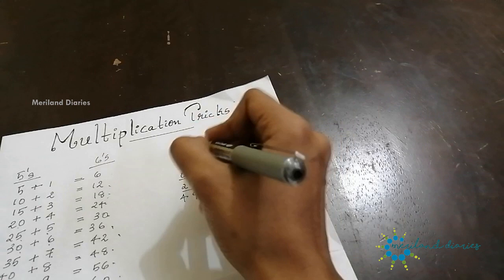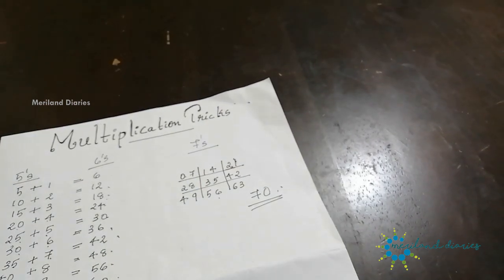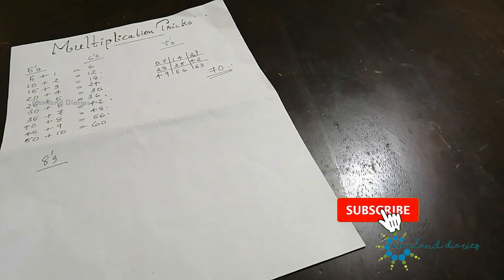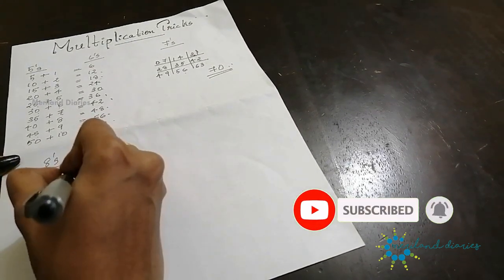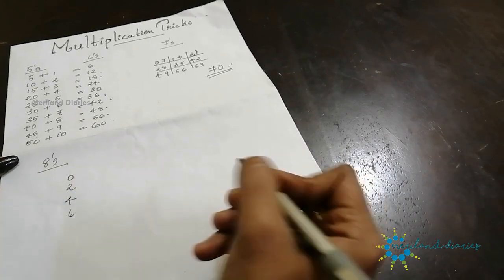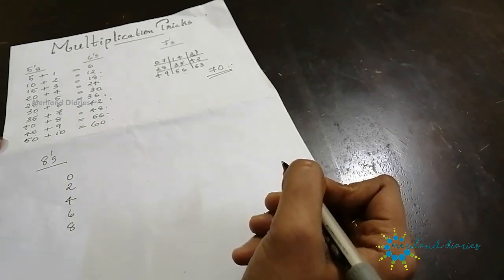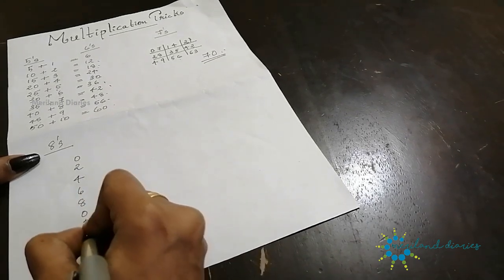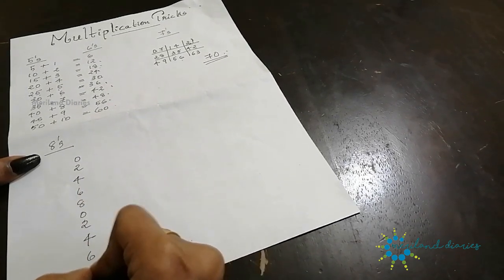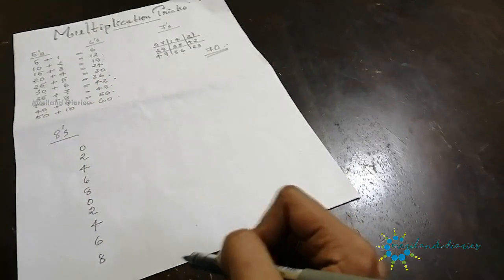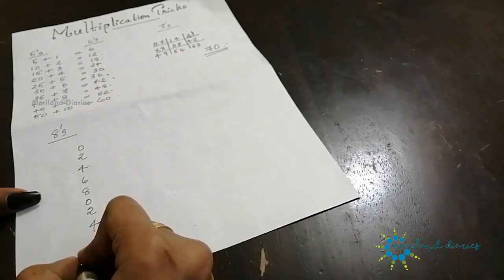For the 8 table, we have to start with even numbers. So I am writing 0, then 2, 4, 6, 8, then again here: 0, 2, 4, 6, 8. Then again even numbers here, then we have to change to natural numbers here: 0, 1, 2, 3.